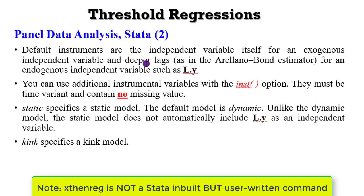By default, STATA uses instruments which are the independent variables themselves. You can also use additional instruments by invoking the instrument option. Remember that the variable you want to use as an instrument must be time-variant and must have no missing values.